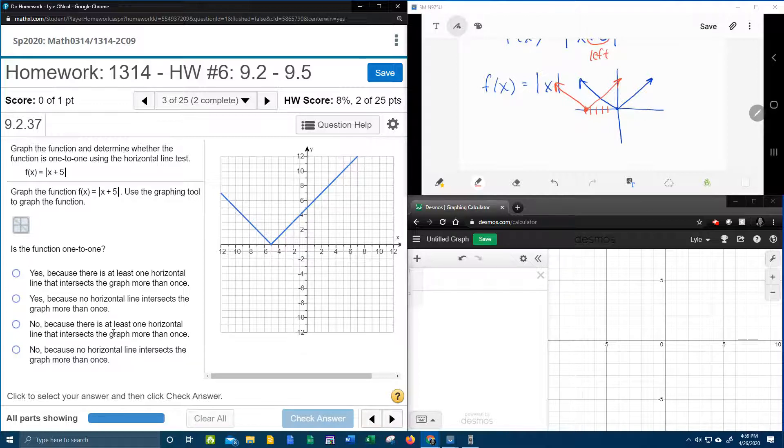Okay, so we know that it's this one, because there is at least one horizontal line that intersects the graph more than once. I can draw any horizontal line and touch more than once. So it's going to be this answer here.